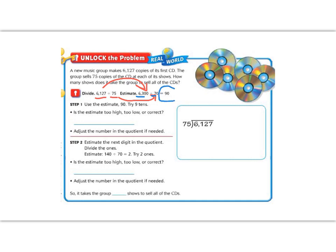And then with a zero left over, we know it's going to be about 90. So now we need to decide if 90 is too high or too low, or exactly what we need. So the first thing that we need to do is we need to estimate. So we're going to try nine tens or 90.